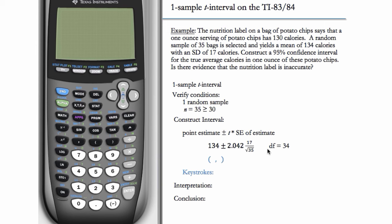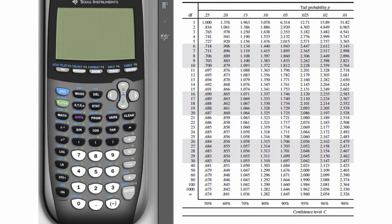So we need T star with 34 degrees of freedom. This is not going to be the same as Z star, so we can't just use 1.96. We have to look at a T table. So we can pull up a T table here and we have a 95% confidence interval. We want to find a row that corresponds to the degrees of freedom.